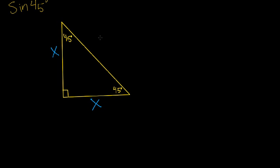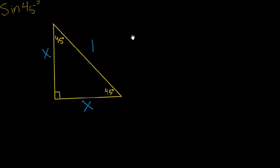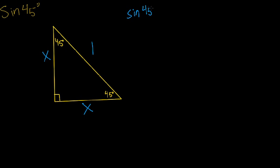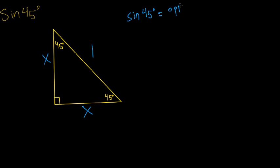Let's label the hypotenuse as 1. So we know that sine of 45 degrees is going to be opposite over hypotenuse. If you look at either of these 45-degree angles, the opposite side is still going to be x, so the numerator is x and the denominator — the hypotenuse — is just 1. This means that sine of 45 degrees equals x, so if we can find x, we'll figure out what sine of 45 degrees is.